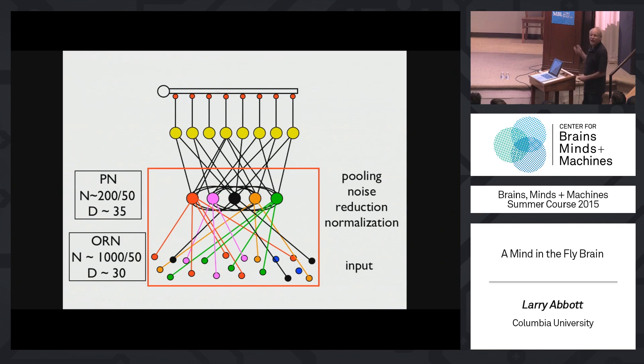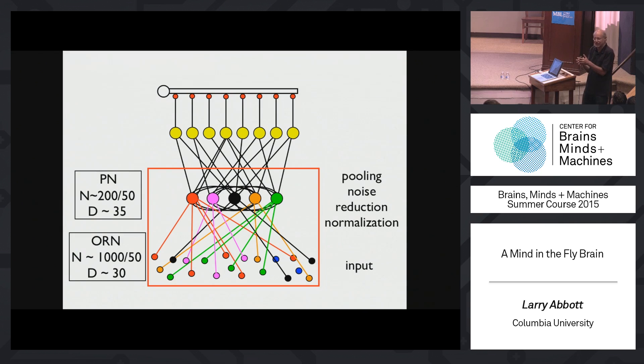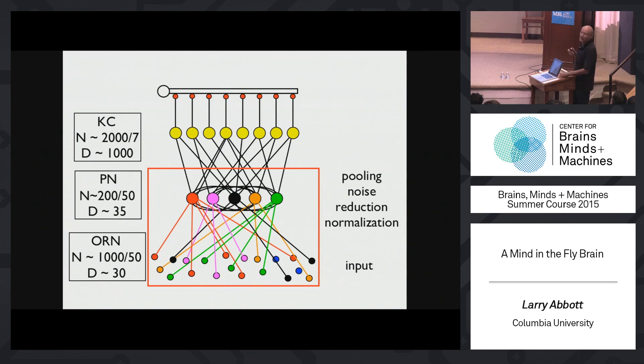The front end of this olfactory system is completely stereotyped — a precise wiring that's the same in every fly. If you look at two neurons of the same type, they look virtually identical. This is a hardwired system. You would not say there's any free will or intelligence in this system; it is simply getting the signal in.